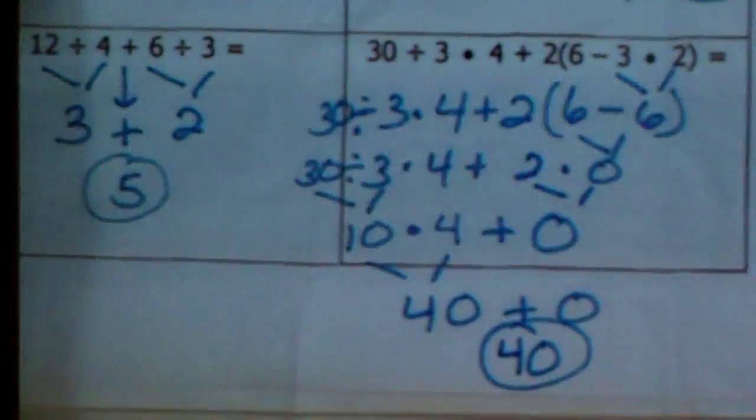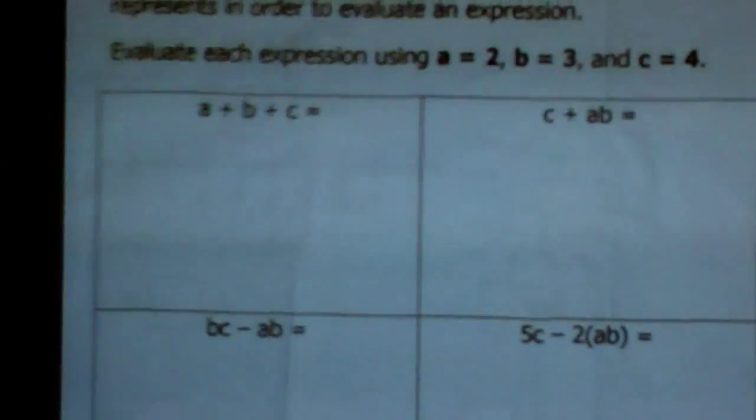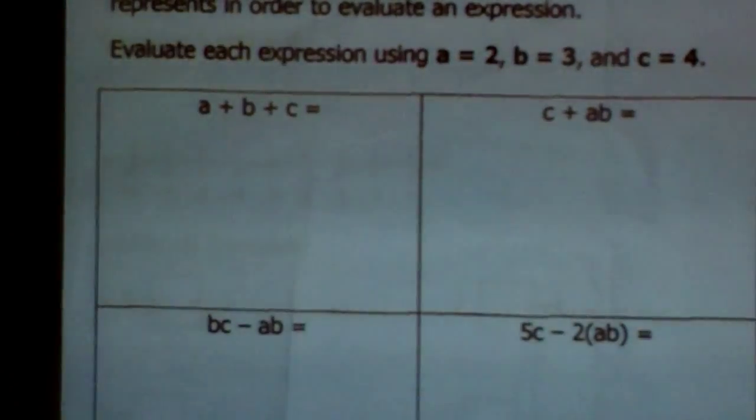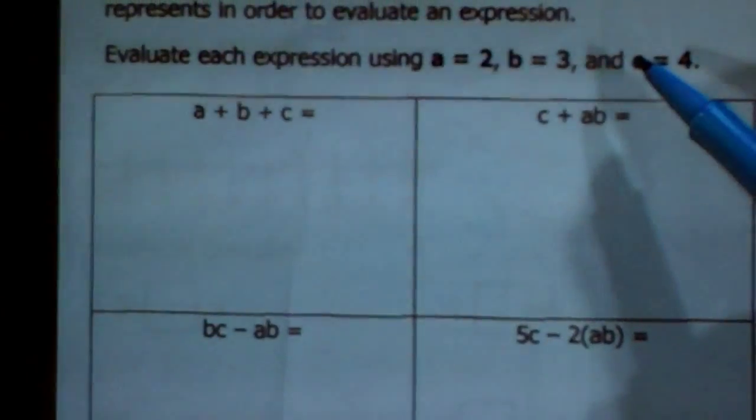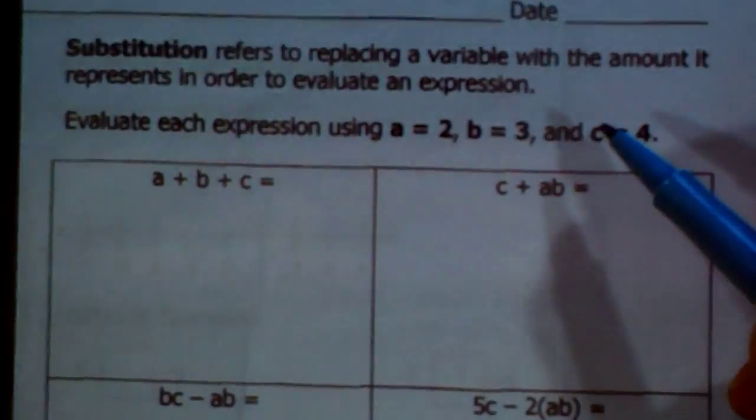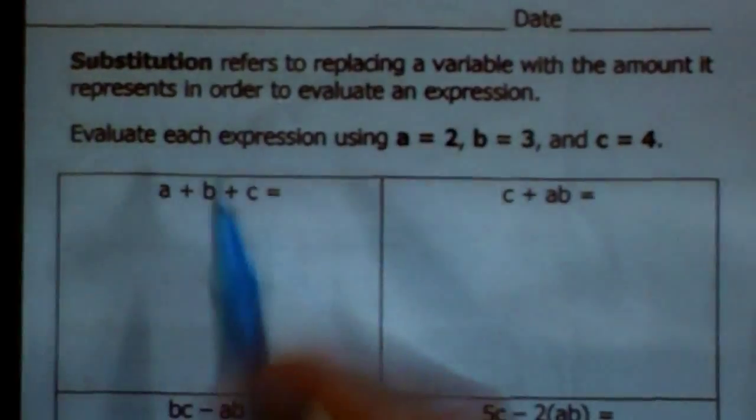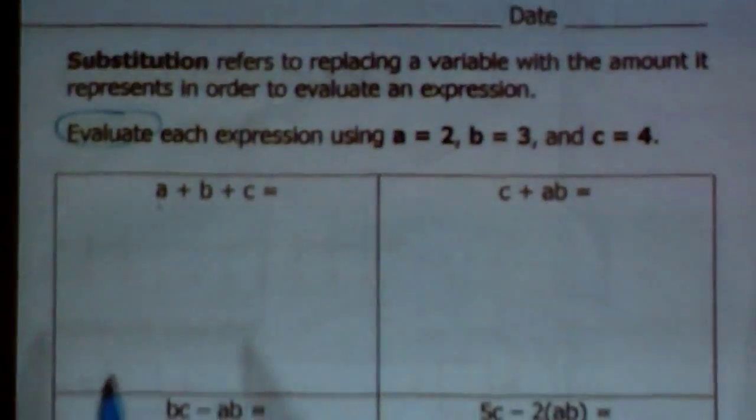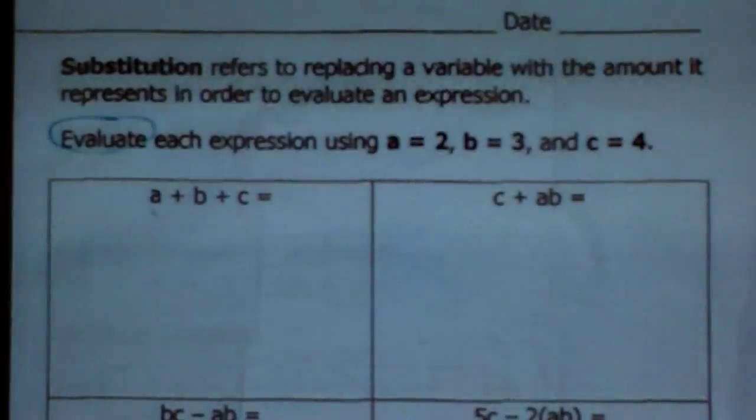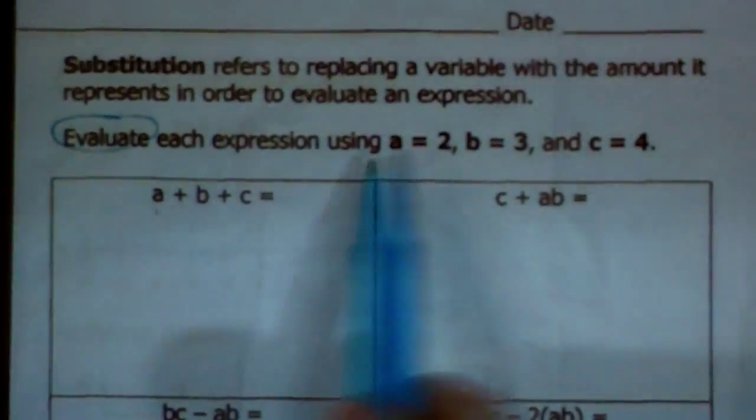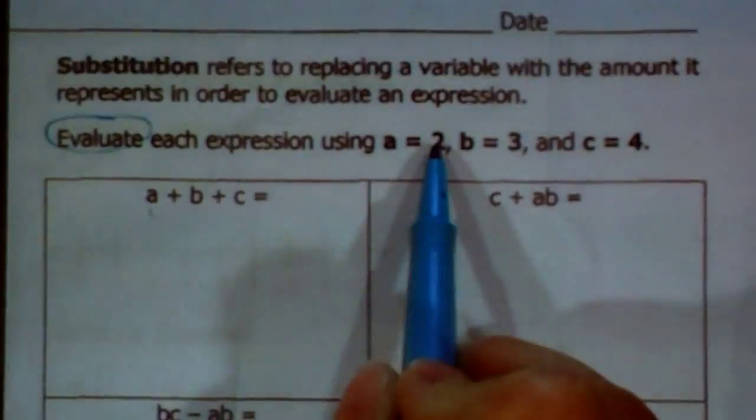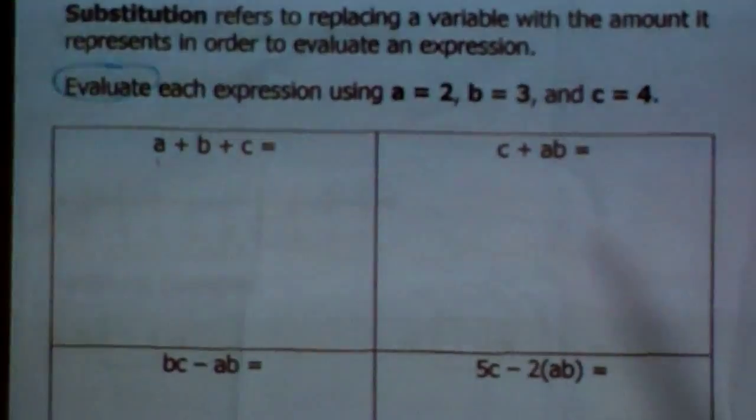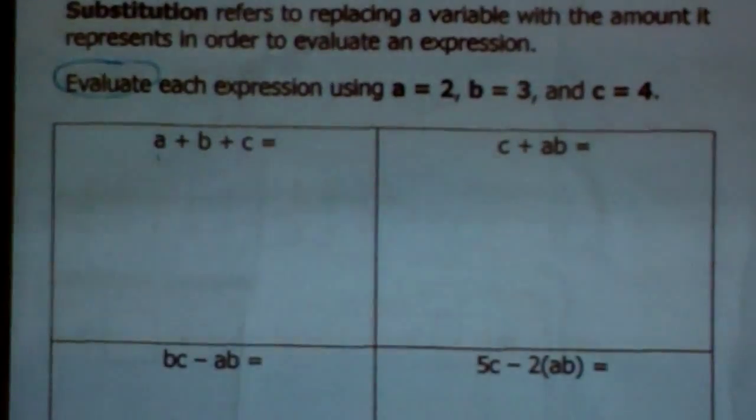All right. I am going to let Mrs. Trembly take care of substitution. She drew the short straw. I get to substitute. All righty. So substitution, that just refers to replacing a variable with the amount it represents in order to evaluate an expression. It also refers to the time when you do the happy dance to walk in your classroom and you see, oh, there's a different teacher there. Excitement. So we're going to use it for math today. So when you see this word evaluate, it's not a trick word. It just means to solve. You're figuring out the answer. So answer each expression using A is 2, B is 3, and C is 4.